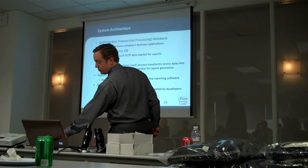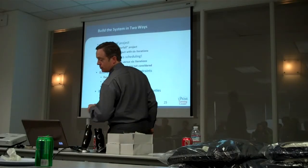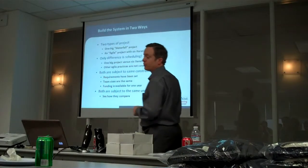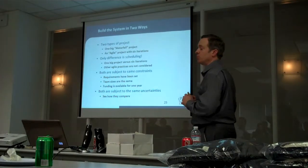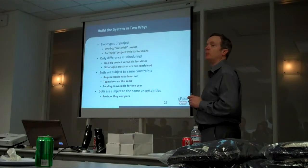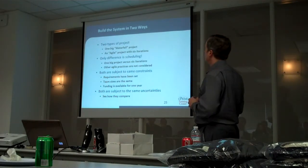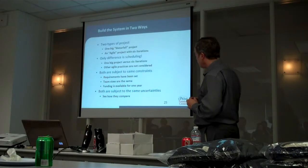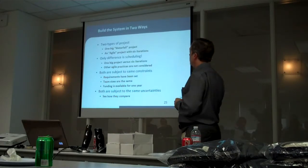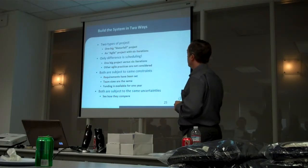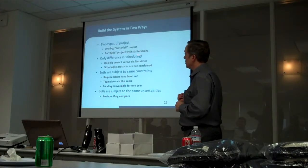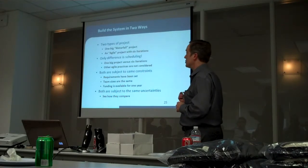Those are the elements of the architecture - that's what we're going to build. That's the what, and here's the how. We're going to do this in two ways: we're going to have one big waterfall project, and then we're also going to build the same system with an Agile project in the span of six iterations.